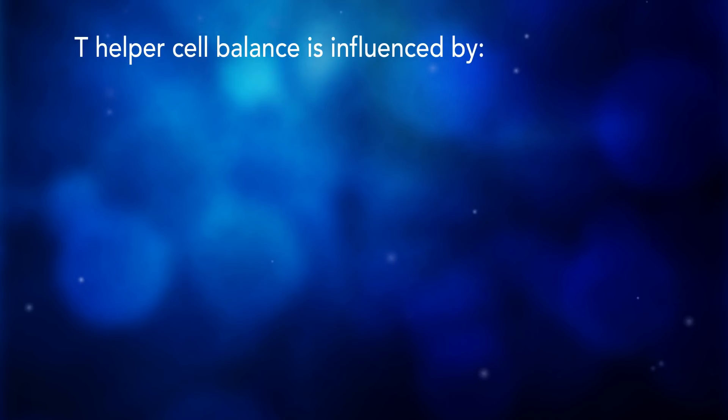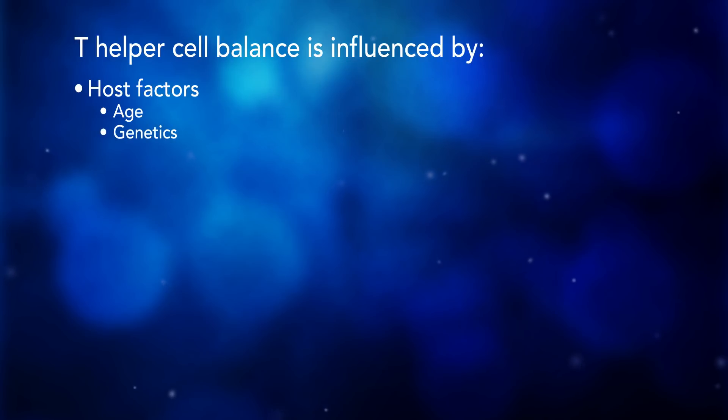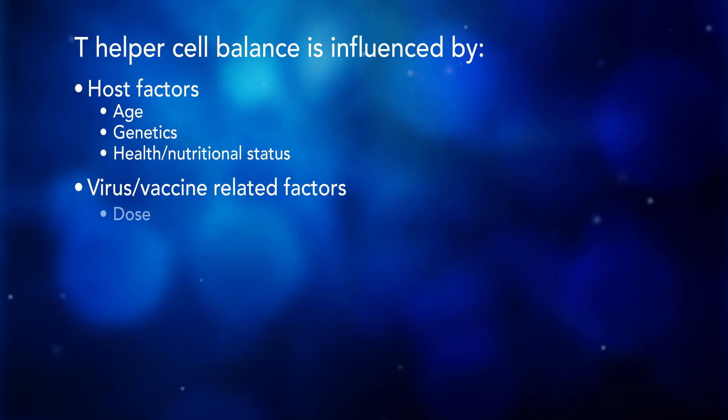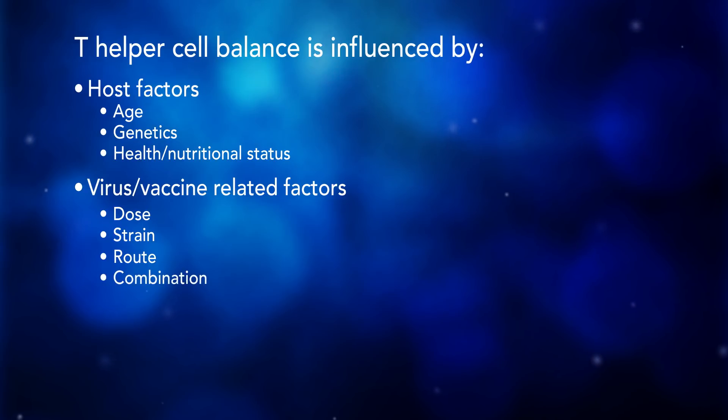T helper cell balance is influenced by host related factors — that is age, the genetic makeup of the host, their health and nutritional status — as well as virus and vaccine related factors such as the dose, the strain, the route by which they're administered, and the combinations in which the vaccine is given with other things, for example mercury or aluminum in other vaccines. Other vaccines that themselves produce a bias in this immune system, given in advance of or at the same time as a measles containing vaccine, may pervert or corrupt or change the immune response to measles virus accordingly.